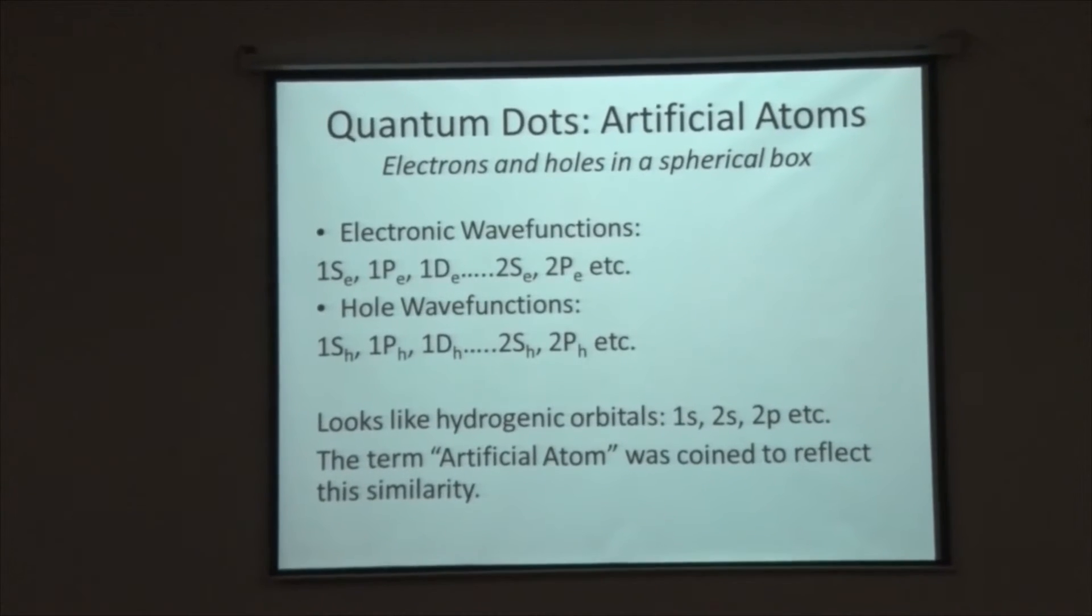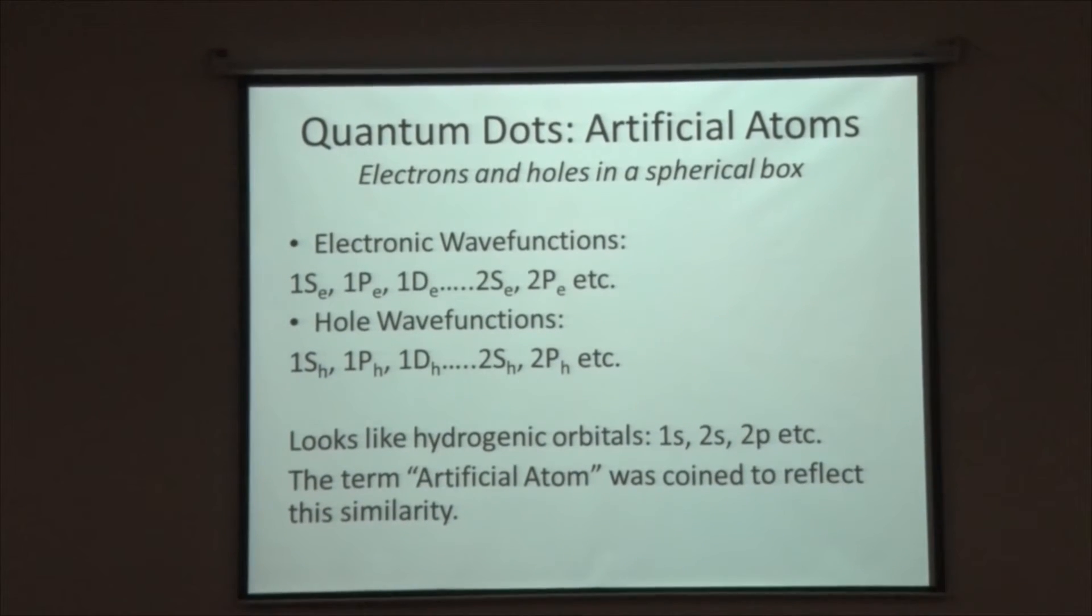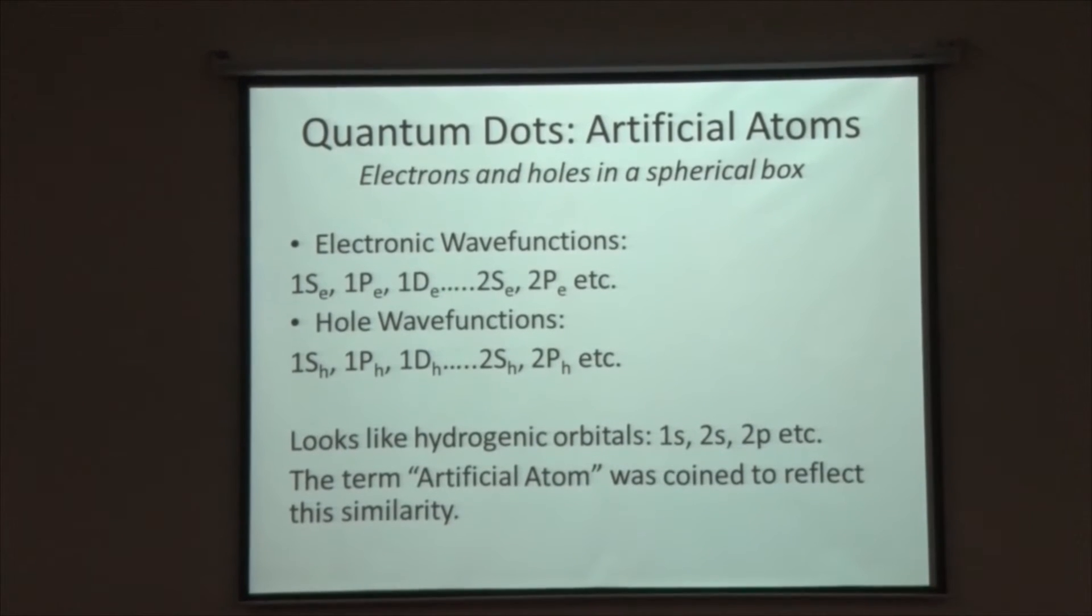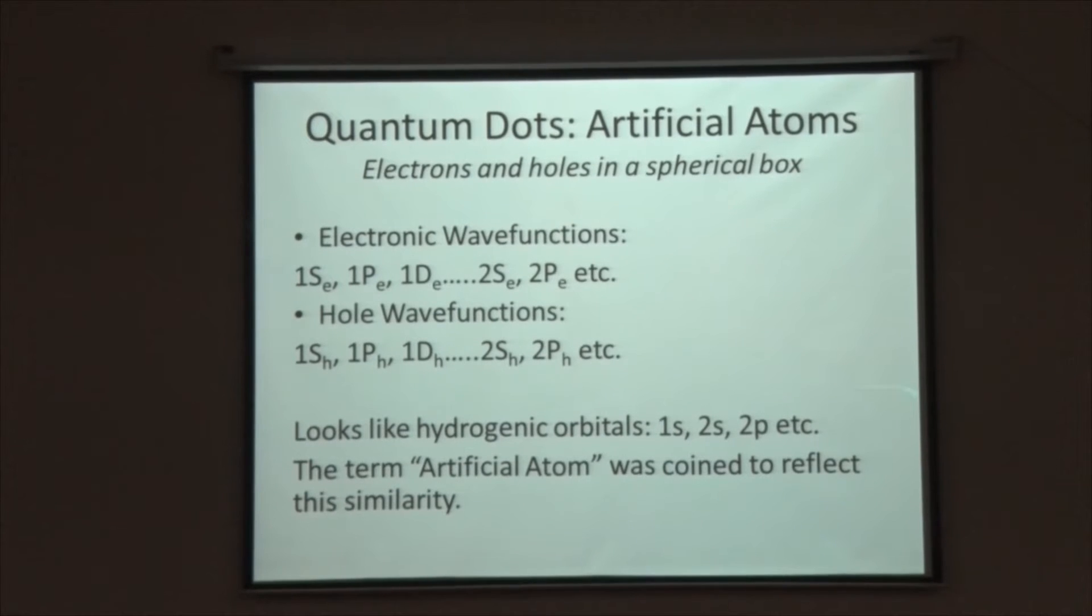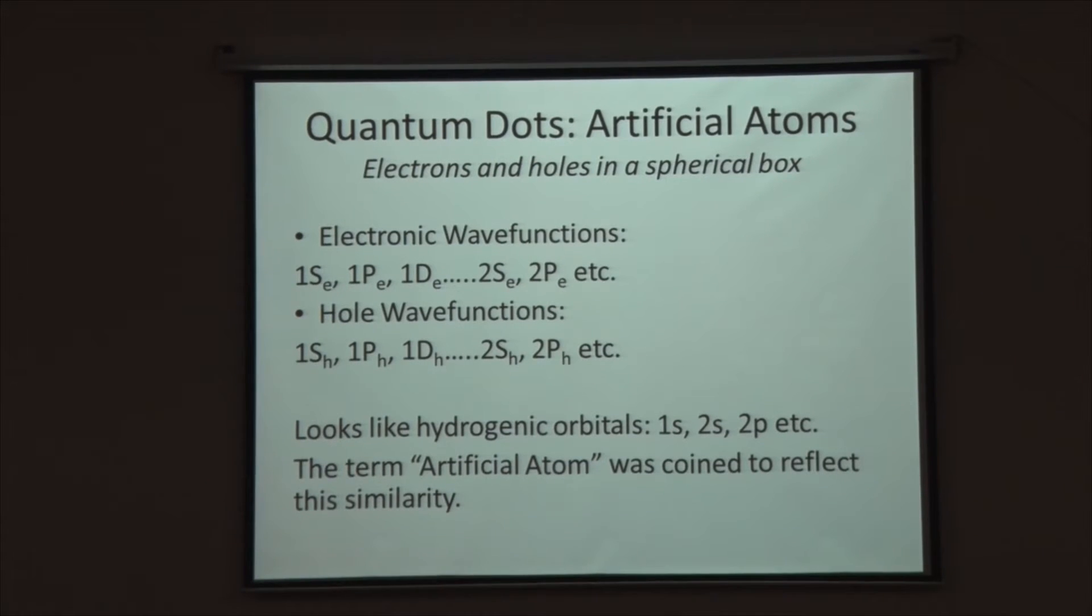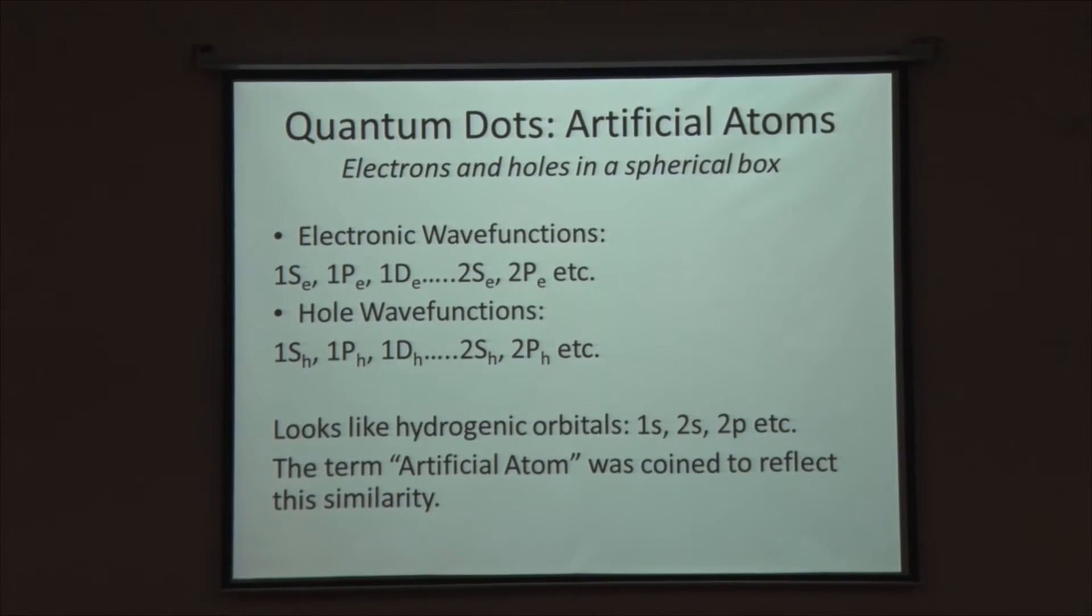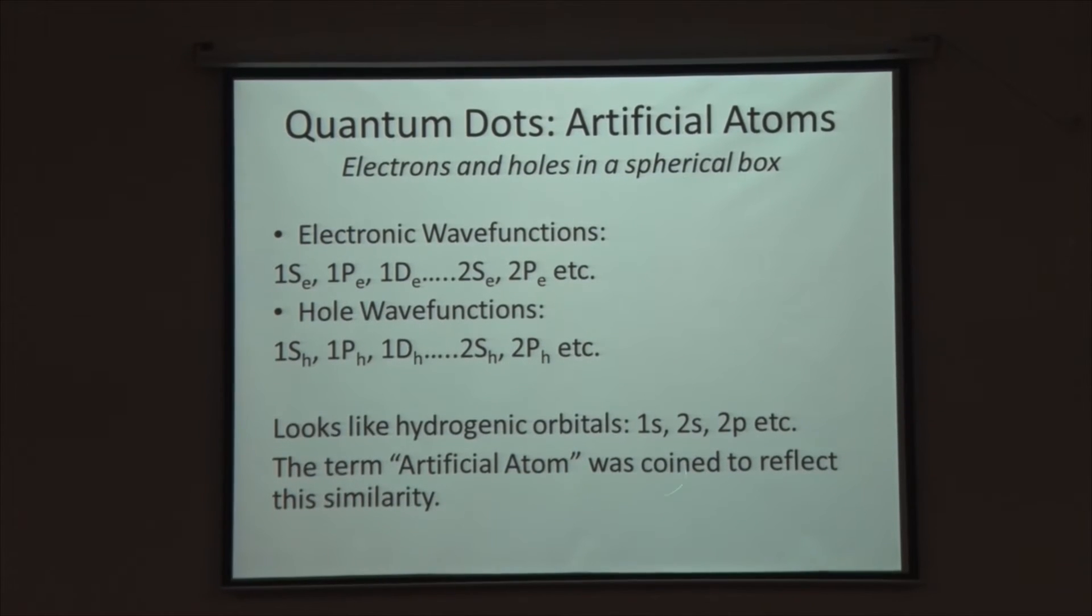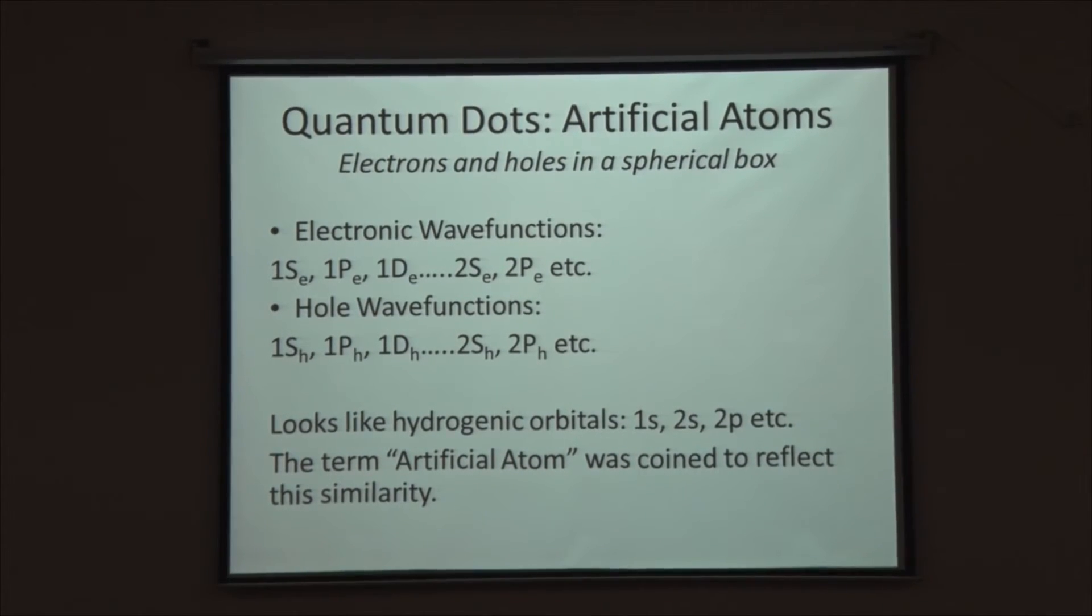If you are thinking of a particle in a box, we immediately know we have wave functions which look like 1s, 1p, 1d, etc. These have a very strong similarity to what are the hydrogenic orbitals: 1s, 2s, 2p. There is no great reason for this similarity. We are dealing with spherically symmetric systems, hence this similarity develops. But looking at this at some point in the history of quantum dot literature, the term artificial atom was coined simply because of this existing spherical symmetry.